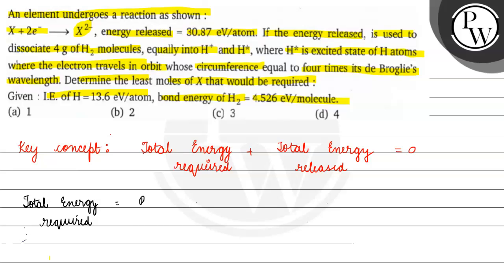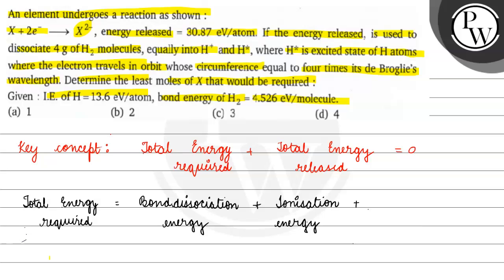The total energy required will be the sum of: bond dissociation energy, ionization energy, and excitation energy. Ionization energy is basically the amount of energy required to remove a loosely bound electron from the outermost orbit of an isolated gaseous atom. The third energy component is excitation energy.